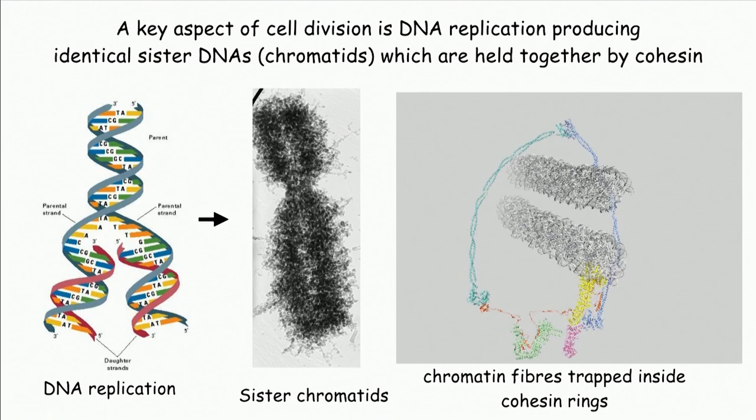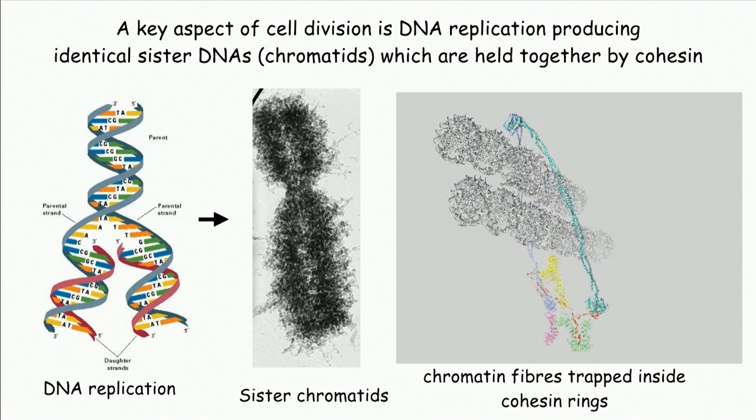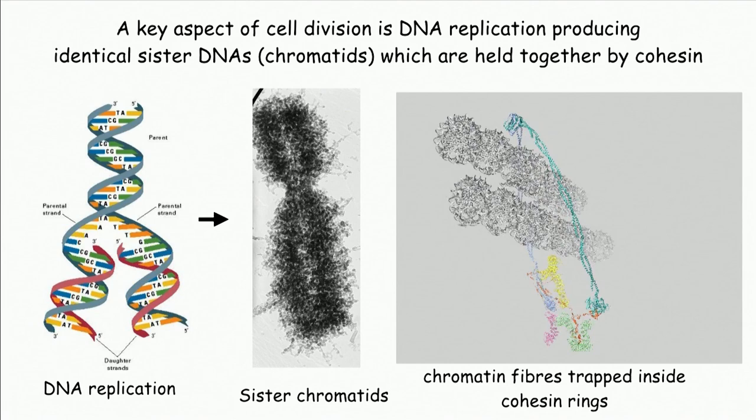At the heart of the cell division process is replication, because all the instructions for the behavior of those cells and for their growth is encoded in DNA. One of the most important events in the life cycle of a cell is the replication of the DNA to produce two sister DNAs. In order for those sister DNAs to be segregated at division, they must be packaged into chromosomes — half chromosomes called chromatids.